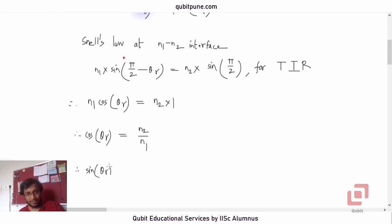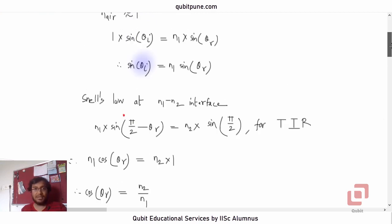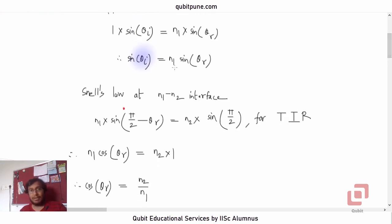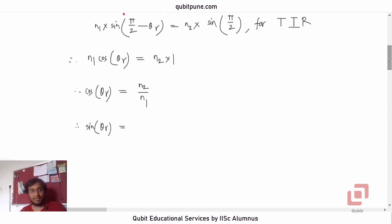So what will be sine theta_r? Because in the first equation when we applied Snell's law for the first time it is n1 sin theta_r, so we somehow need to find sine theta_r from this expression for cos theta_r and that is not very difficult. It is going to be root of 1 minus cos squared theta_r, standard formula.